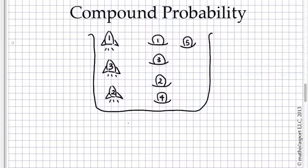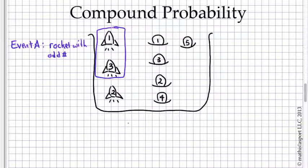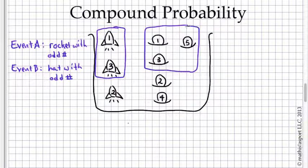So let's call event A, we'll call event A that you choose a rocket with an odd number. Rocket with an odd number on it. So that would be these two rockets. And event B we'll call choosing a hat with an odd number. So that would be one of these three.